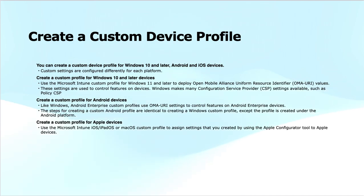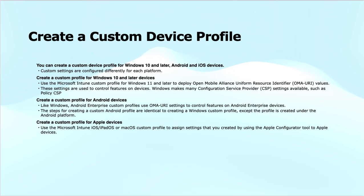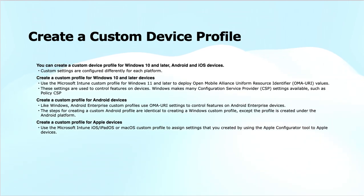You create a custom device profile using the Configuration Service Provider (CSP) for Windows. We can apply these custom settings, and they are configured differently for each platform. The Policy CSP is a very commonly used CSP — you will find a link in the description of this video for more details. We can also create custom profiles for Android devices, where we use OMA-URI settings to control features on Android and Android Enterprise devices.